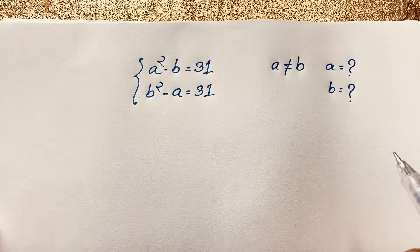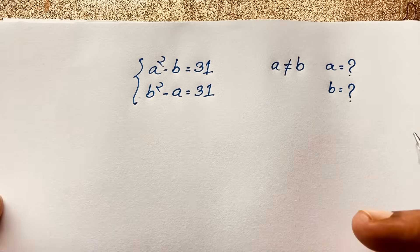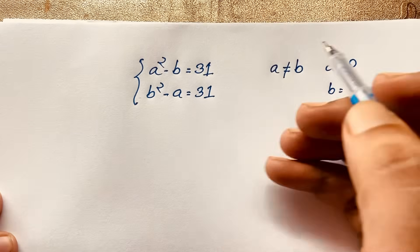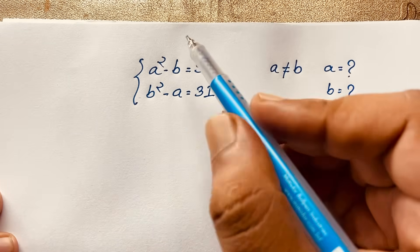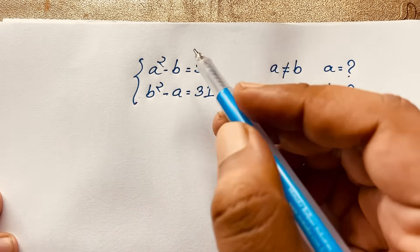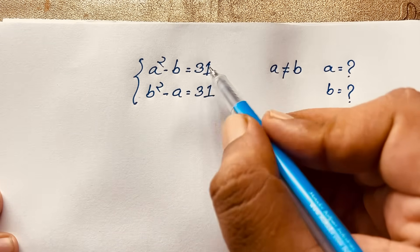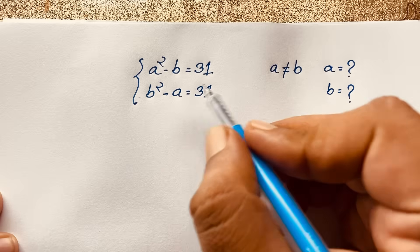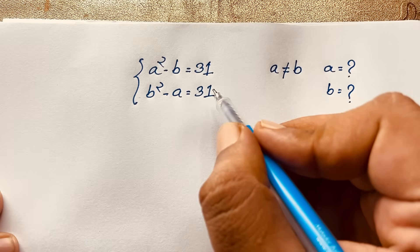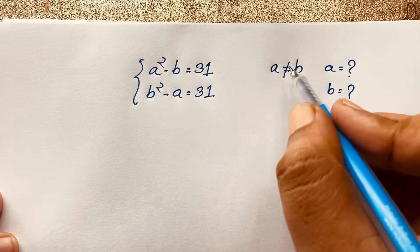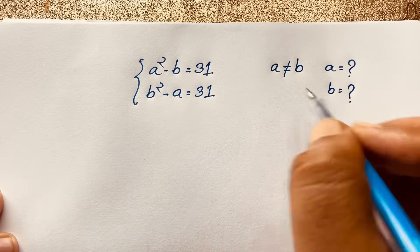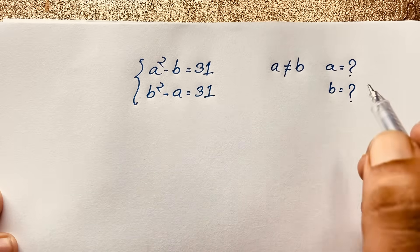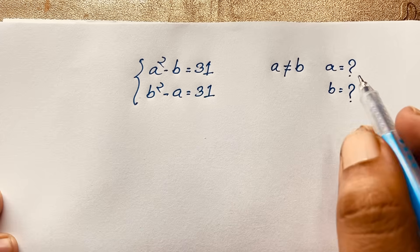Hello everyone, welcome to Rasha's Classroom. Today we have solved an interesting algebra problem: A squared minus B is equal to 31, B squared minus A is equal to 31, A is not equal to B. And B is equal to what? How to solve this algebra problem?